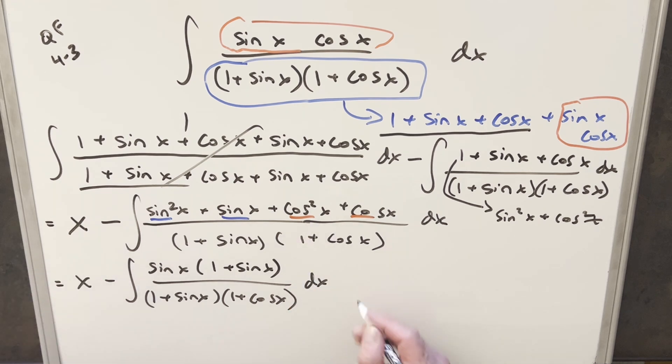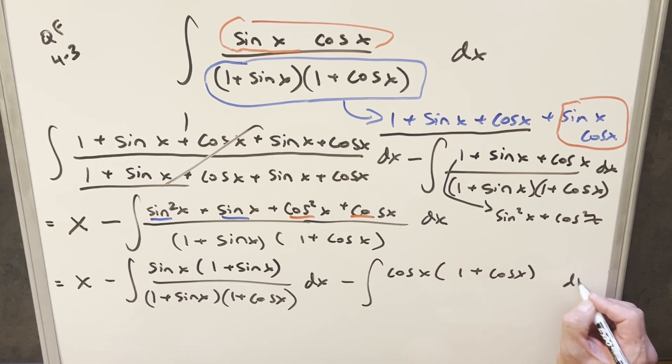And then for the second one, doing the same thing, distributing in the minus sign, this is going to become cosine x times 1 plus cosine x. And this is going to be all over the same denominator.